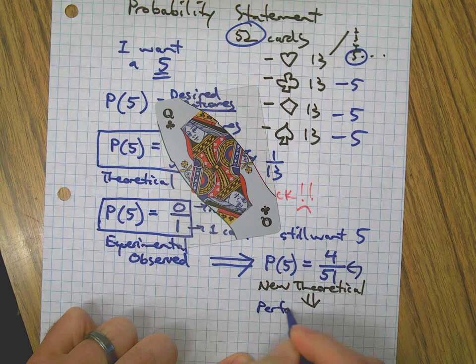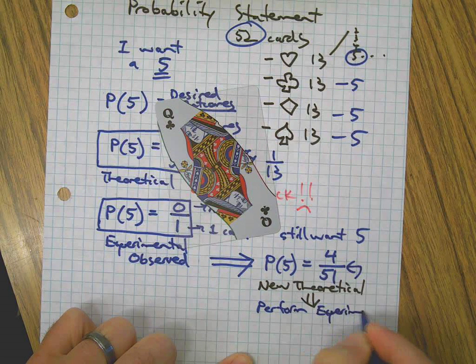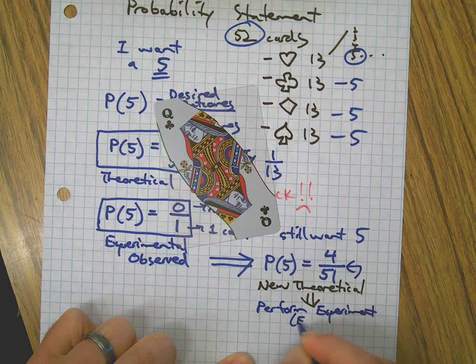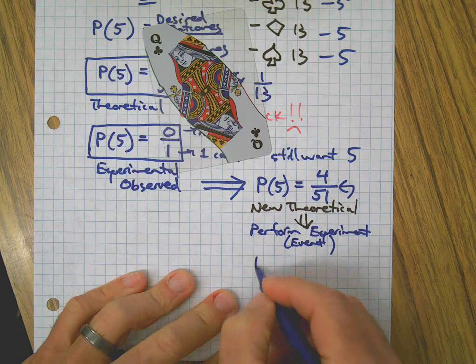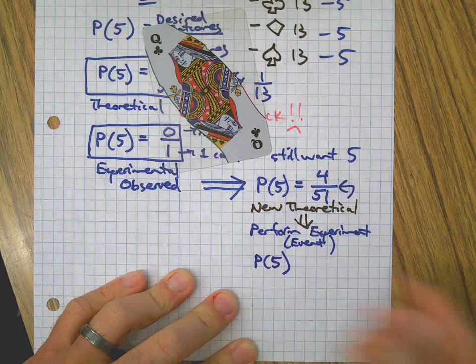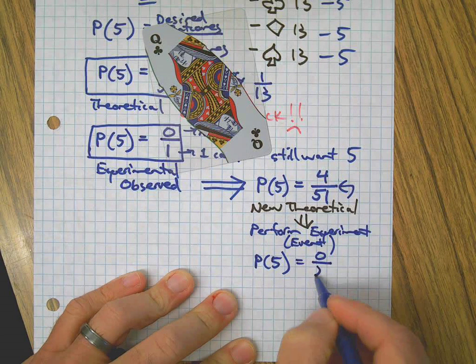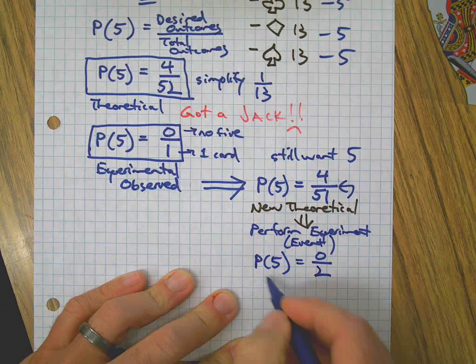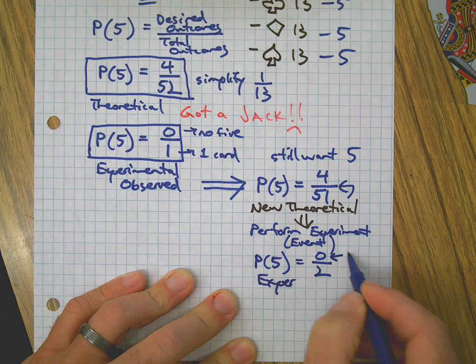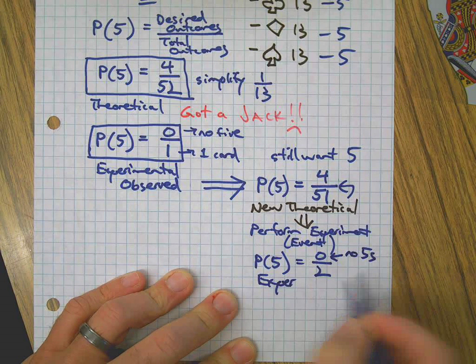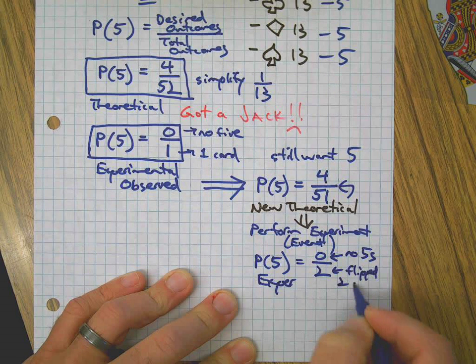So theoretical is here. Performed the experiment, which was flipping a card. In this instance, that's called the event. And what happened? Probability of a 5: 0. How many cards have I flipped over now? 2. I have flipped over 2 cards, a jack and a queen. 0 means no 5s yet, and the 2 means that I flipped 2 cards.